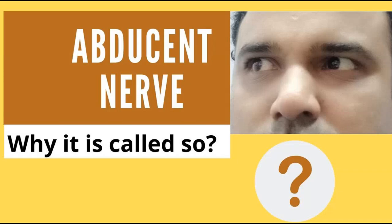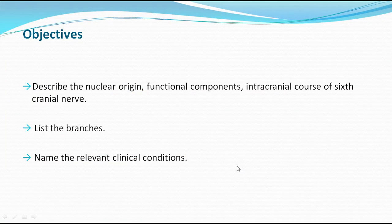Hello everyone, welcome to my YouTube channel Logic Medico. Today's interesting topic is the abducent nerve - why it is called so, and what is its action on the eyeball. The objectives of today's presentation are to describe the nuclear origin, functional components, and intracranial course of the sixth cranial nerve, and to list the branches and relevant conditions affecting this nerve.